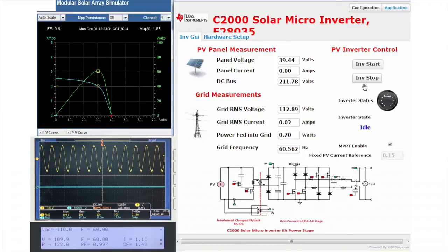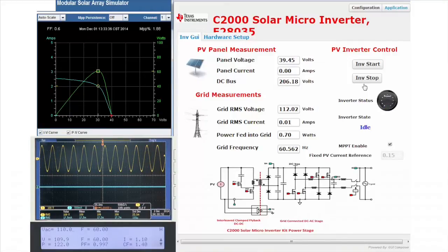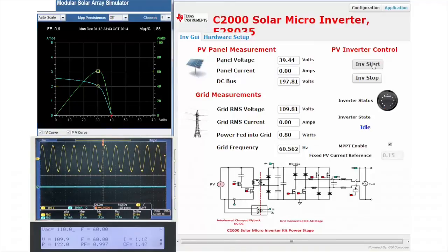Powering up the panel emulator and the AC source, we see the panel voltage which is around 40 volts and the grid voltage that is around 110 volts being shown on the GUI. Now, let's start the inverter by clicking on inverter start button.